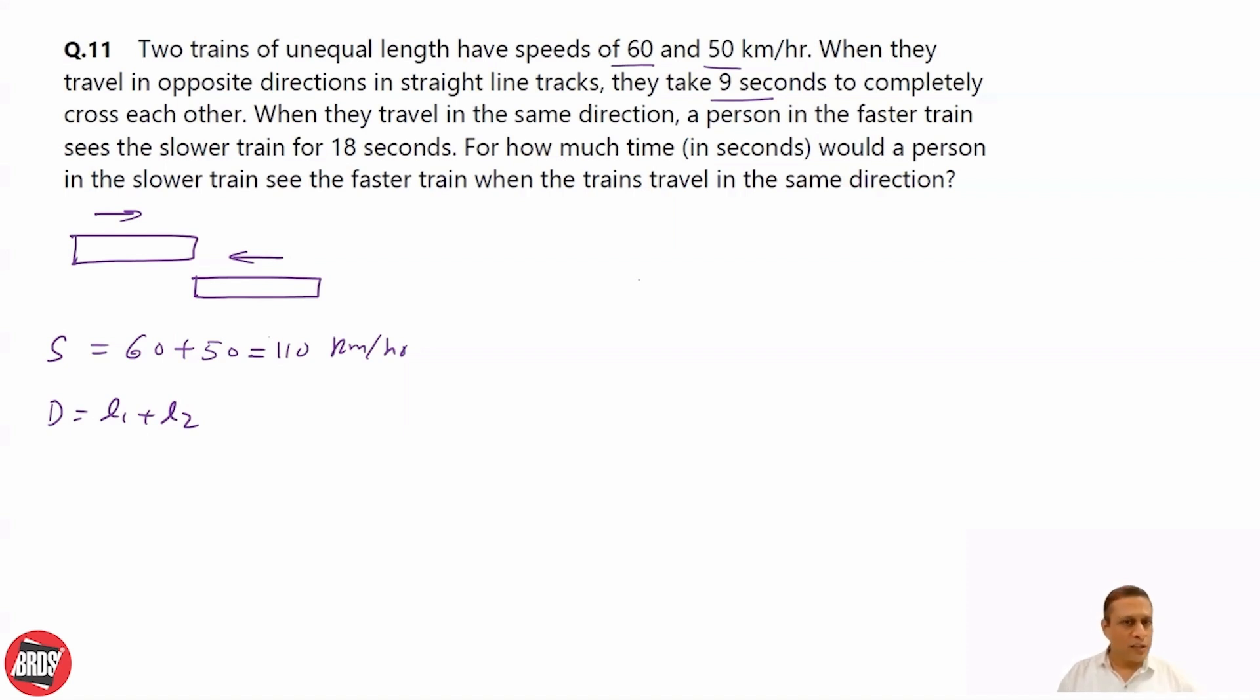And the time is 9 seconds. So, let's use speed equals distance over time. Speed 110 is equal to distance L1 plus L2 over time 9. What is the problem? The time is in seconds and this is in kilometers per hour. So, we need to convert into meter per second. Let me multiply this by 5 by 18. So, this is meter per sec, this is L1 plus L2 divided by 9.